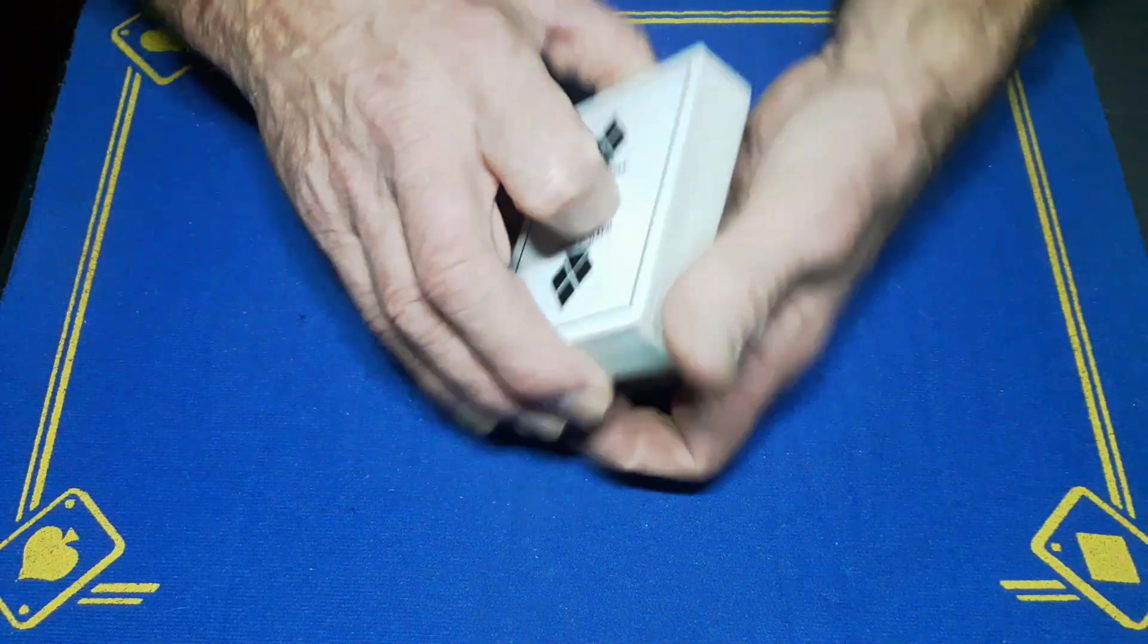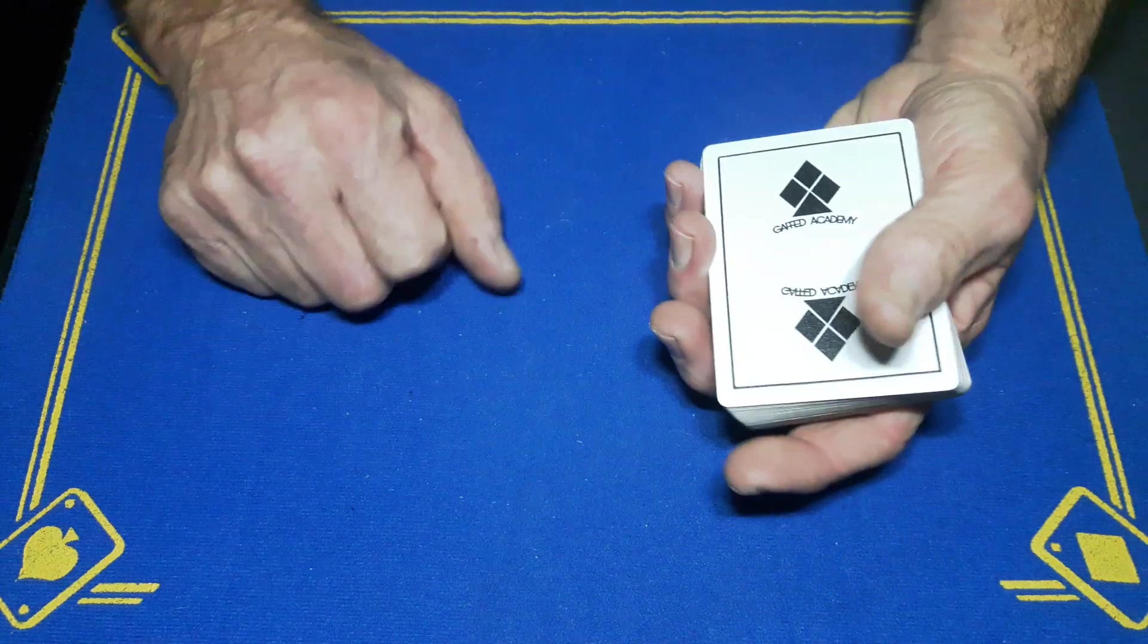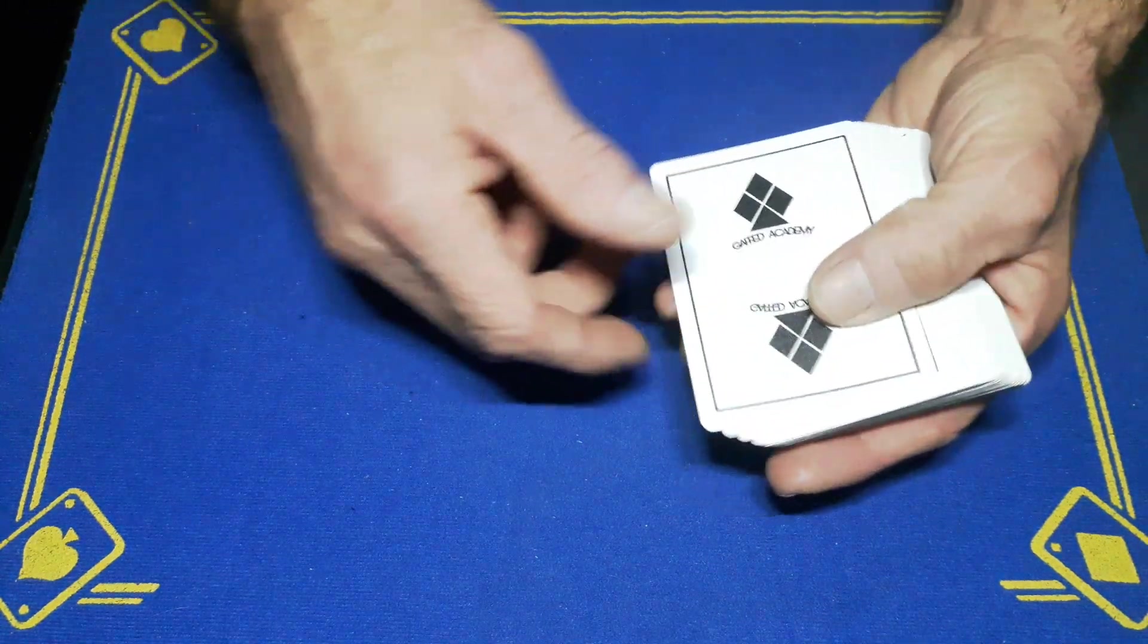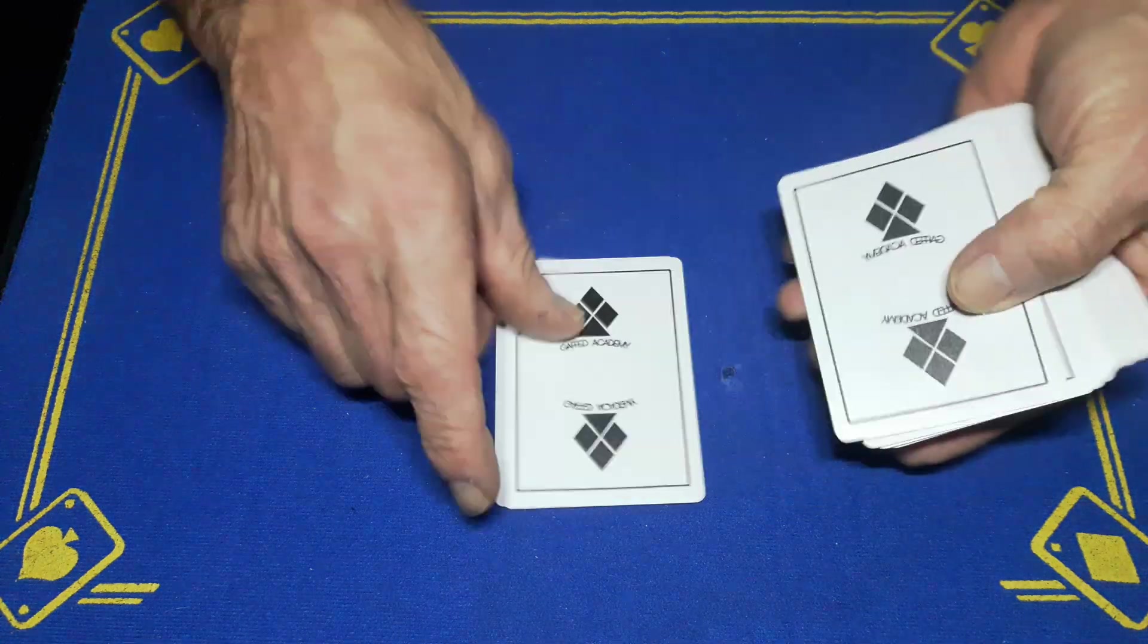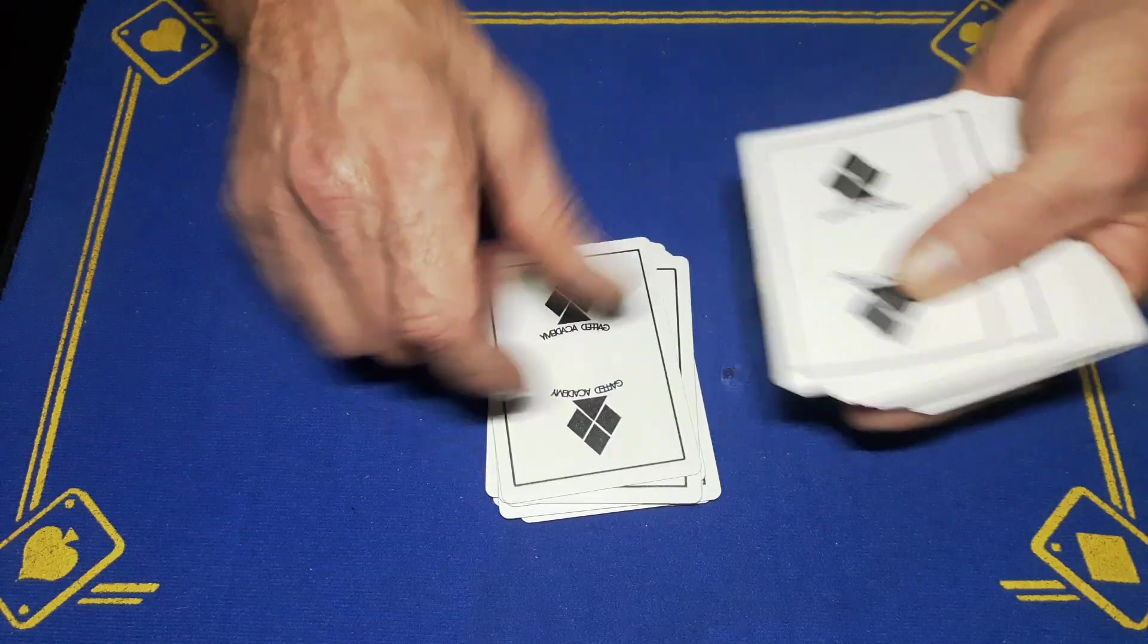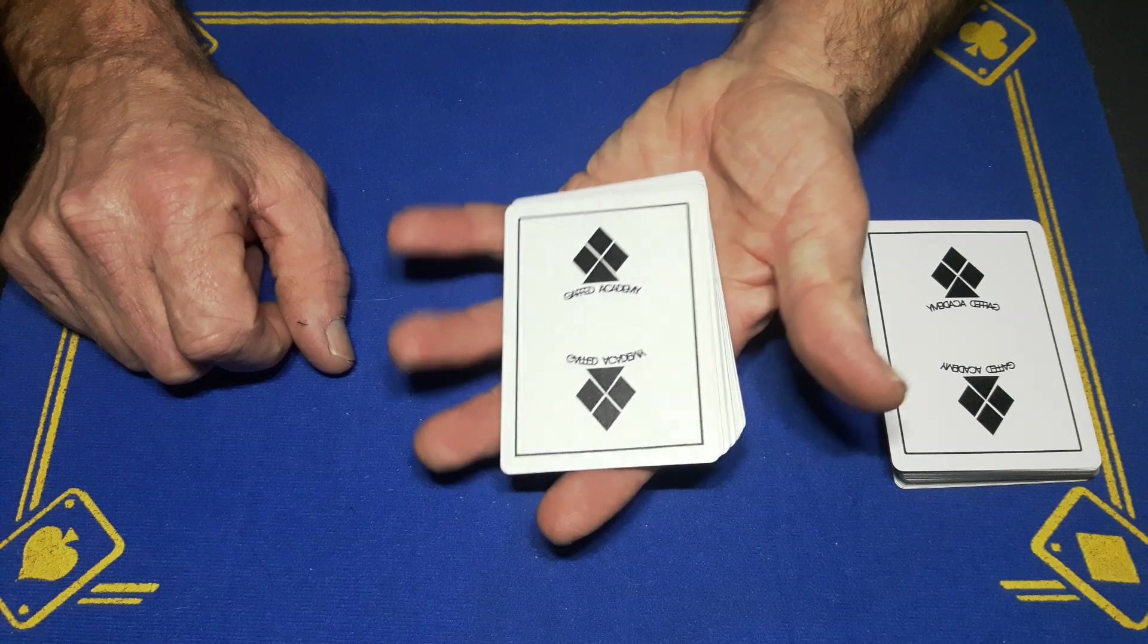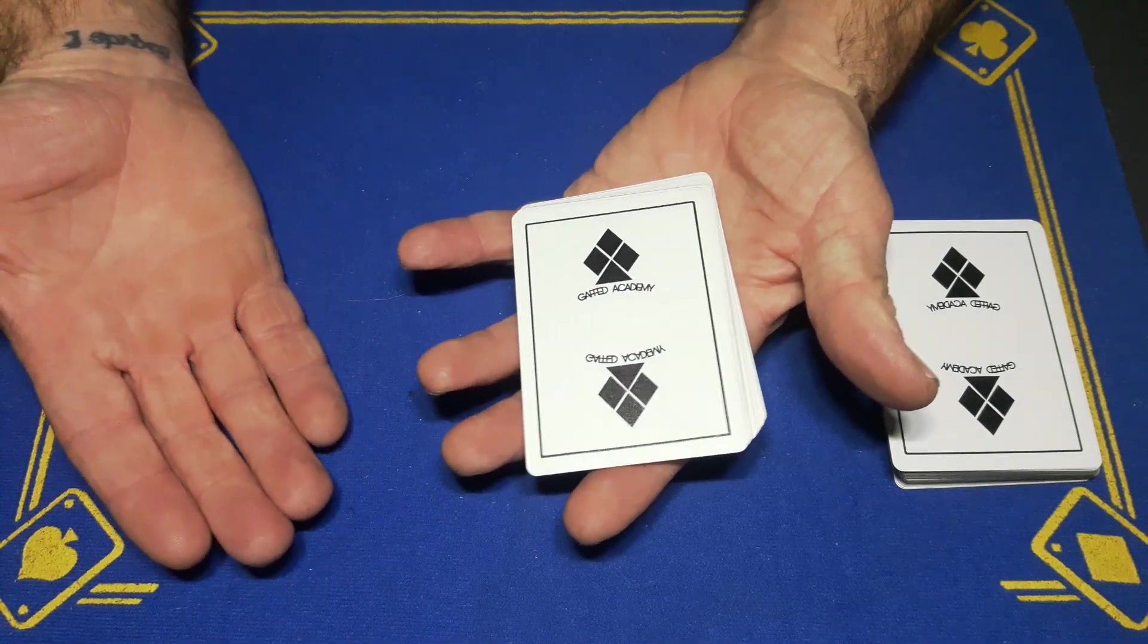Now you've got your fourth card on top. Give me any number. Let's say they give you the number 13. Deal 13 cards: 1, 2, 3, 4, 5, 6, 7, 8, 9, 10, 11, 12, 13. Say to your spectator there's no way you could have known they were going to call 13.